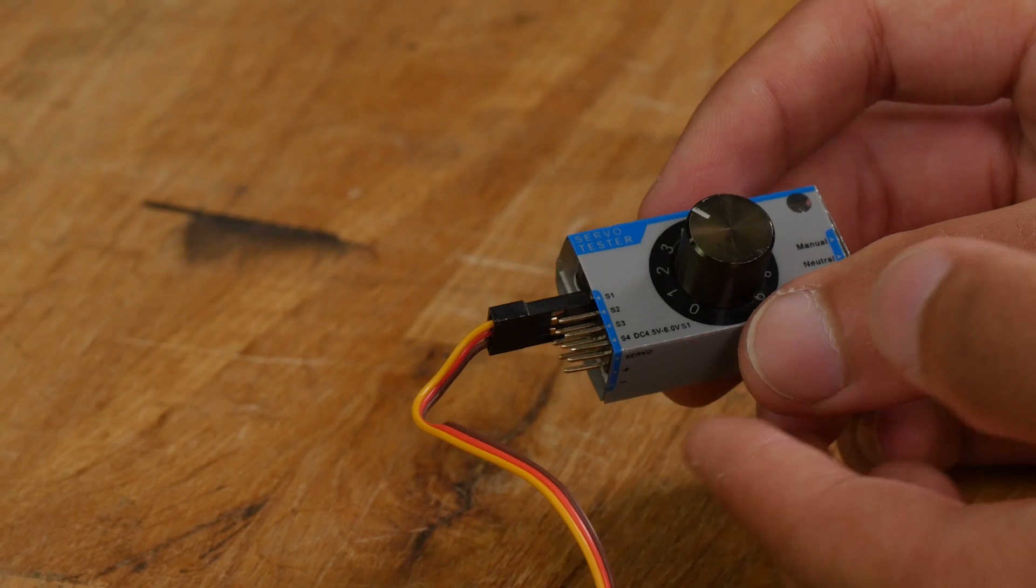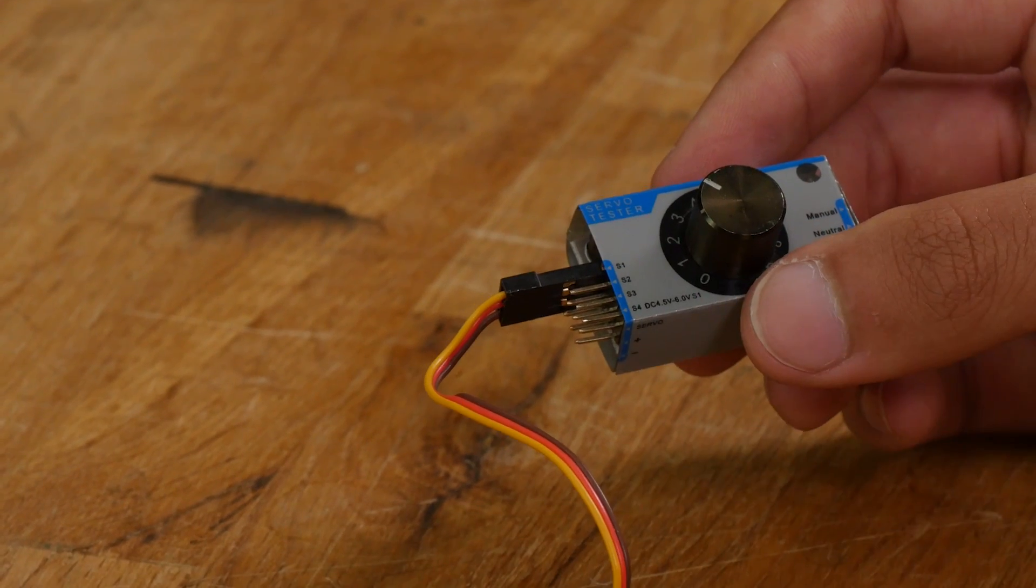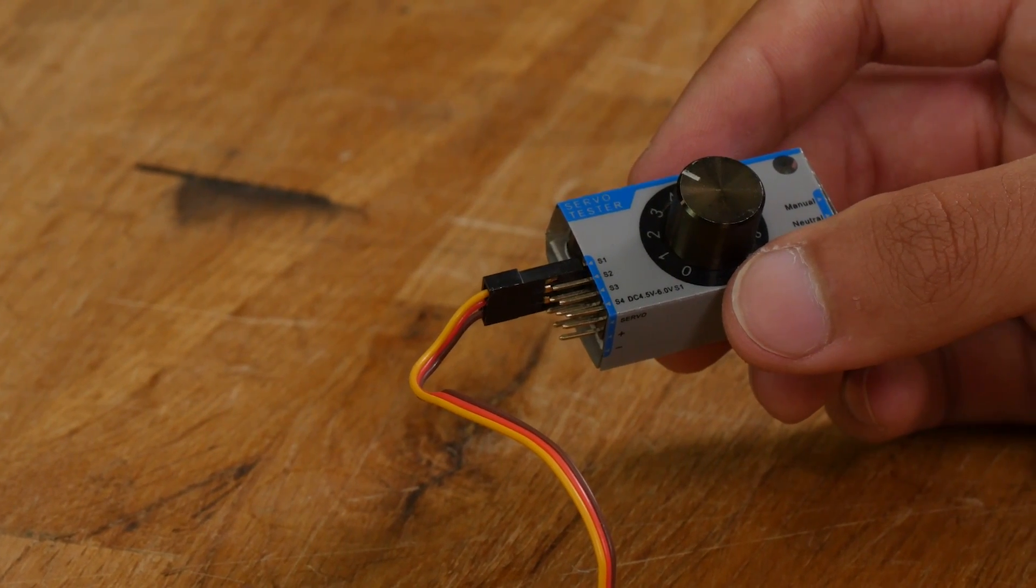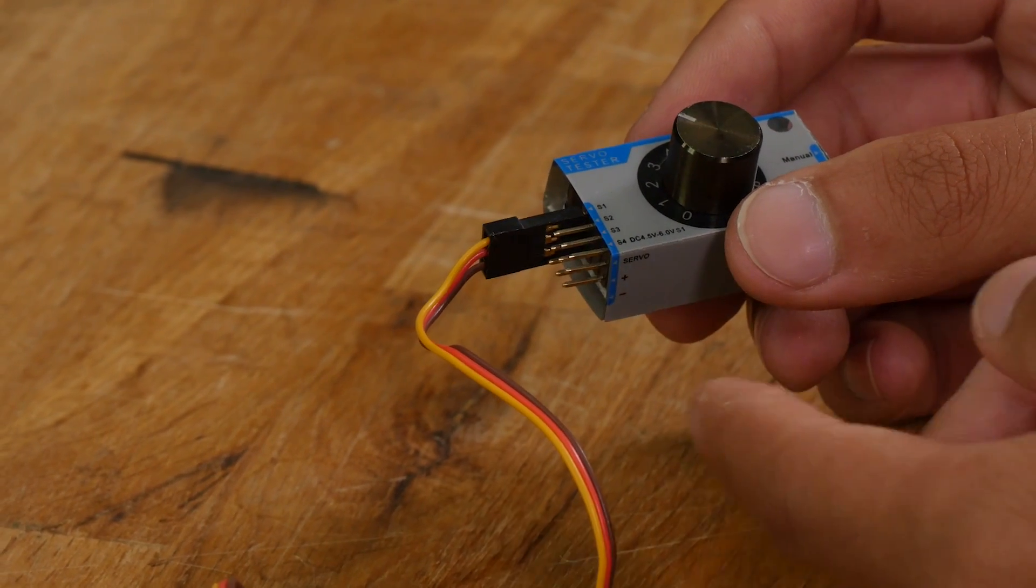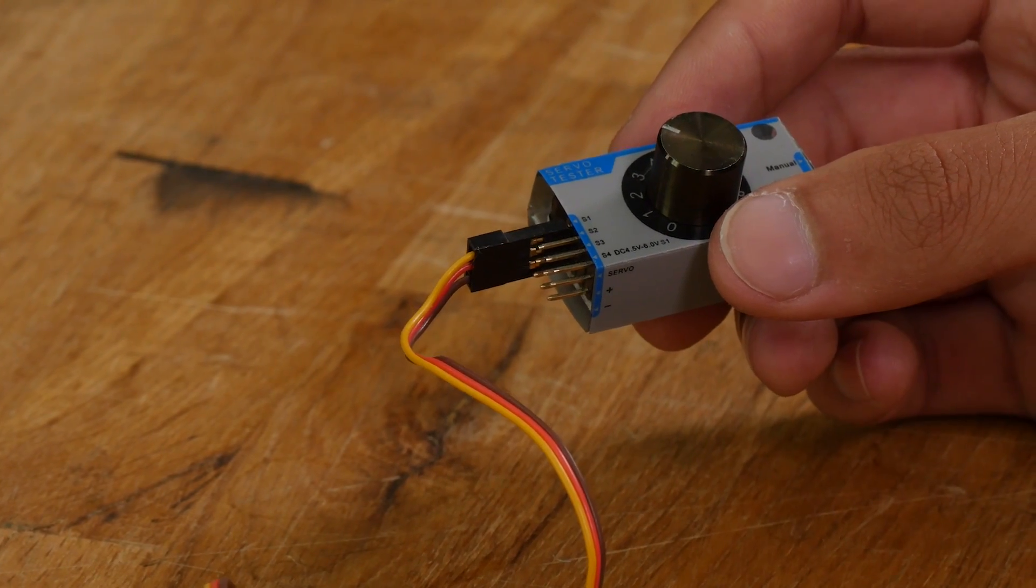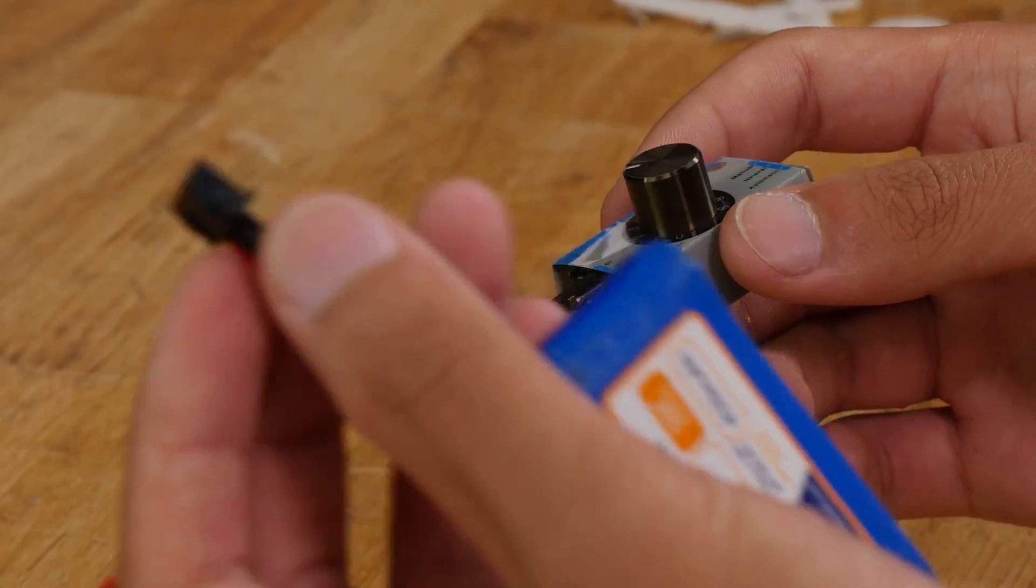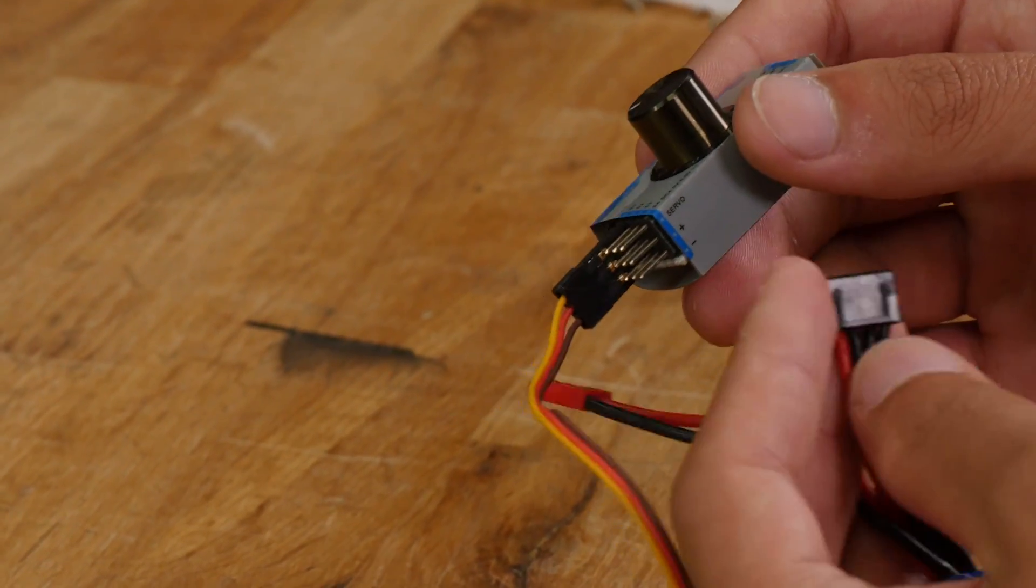As you can see, the servo tester has four outputs for your servo and battery connection. It doesn't matter which one you put your servo into or your battery into—the positive and negative rails are all connected, so it should be the same. I'm going to plug the battery into the outside one just so you can see it.